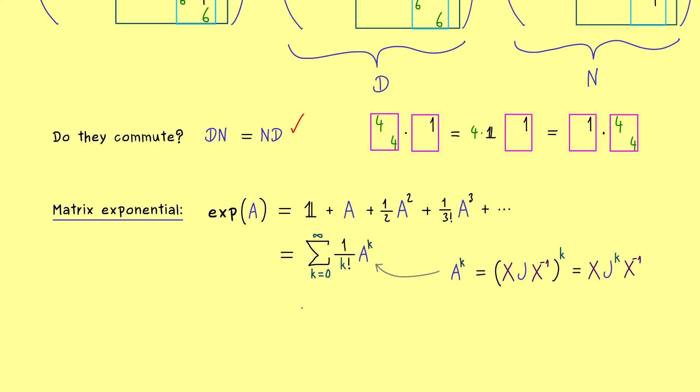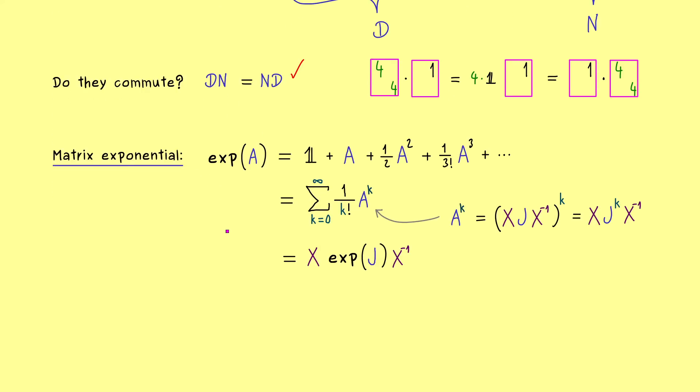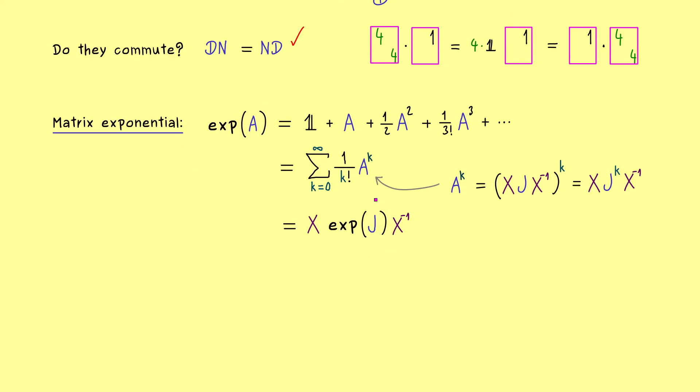So what essentially remains is just X times J to the power k times X inverse. And since this calculation works for the whole sum in the matrix exponential, we can use it immediately. So we have X times the exponential of the Jordan normal form J, times X inverse. So our matrix exponential here is transformed in the same way as A. Therefore, in order to calculate the matrix exponential, we just have to calculate the matrix exponential of a Jordan normal form.